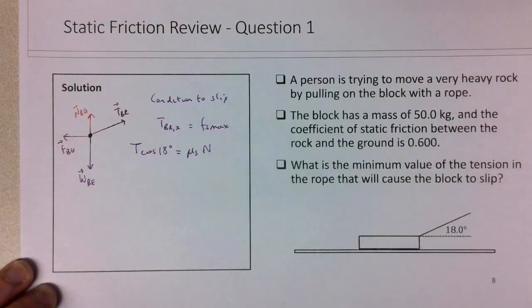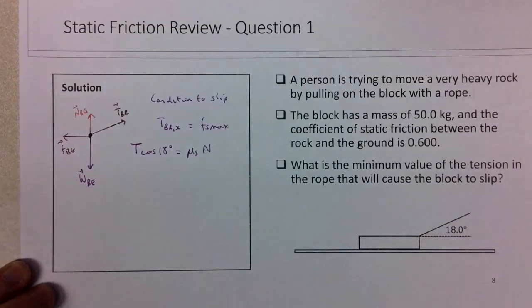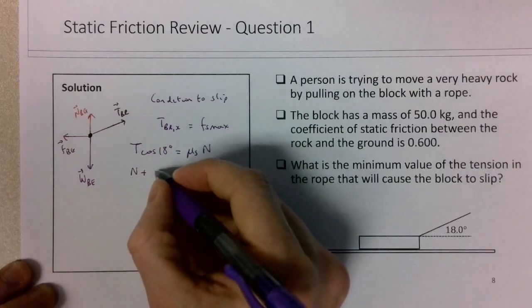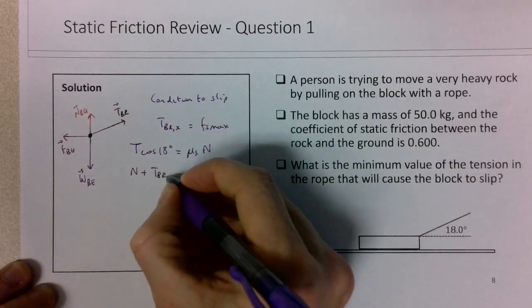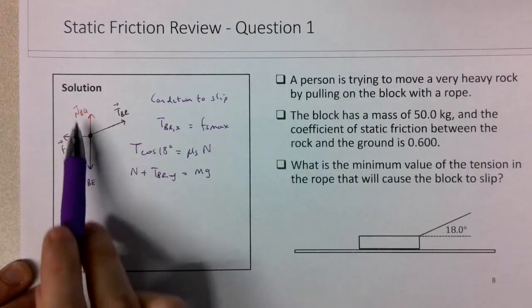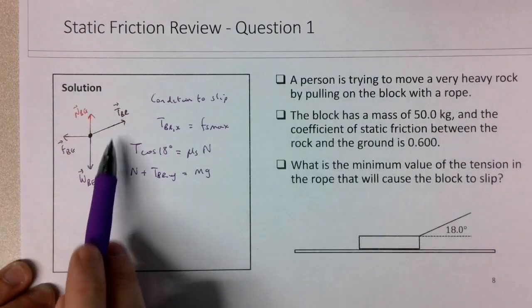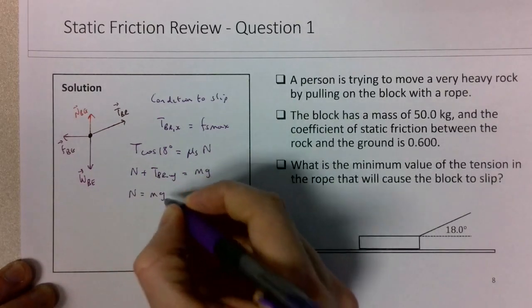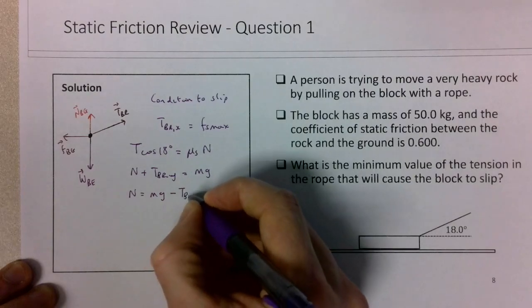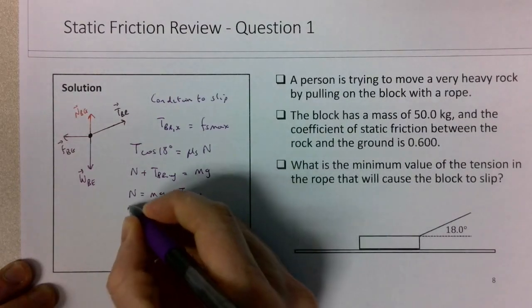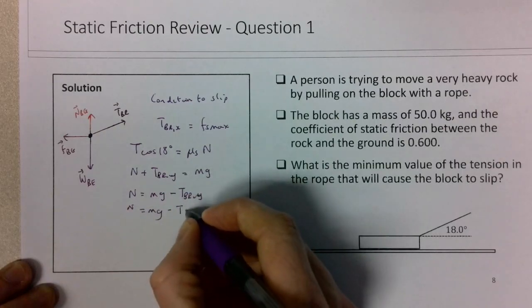Now what we have to think here is that the normal is not just equal to the weight. But we know that the normal plus T_y is equal to mg. So the normal is equal to mg minus T_y, which of course is equal to mg minus T sine of 18.